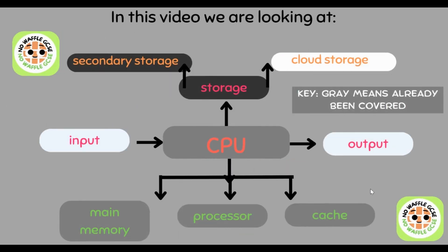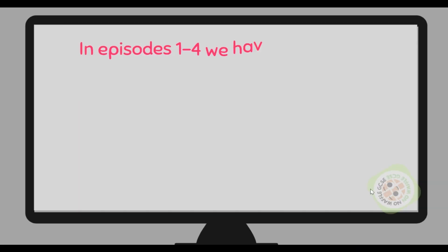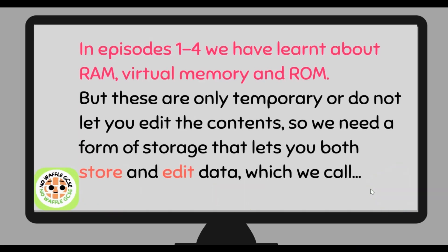In episodes one to four we learned about three different types of memory: random access memory, virtual memory, and read only memory. But because these are all classified as memory, they are either only a temporary store, or if they're not temporary, you can't edit the contents. So we need a different form of storage.